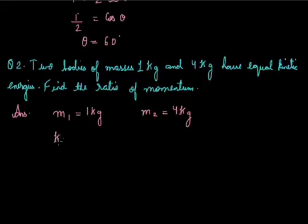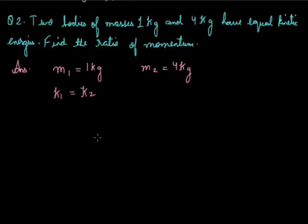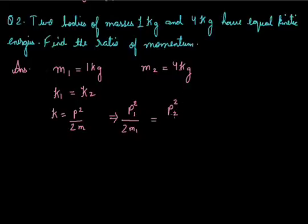So K₁, the kinetic energy of the first body, is equal to K₂, the kinetic energy of the second body. We know that the relation between kinetic energy and momentum is: kinetic energy equals P² over 2M. So according to the given problem we can state that P₁² / 2M₁ = P₂² / 2M₂.